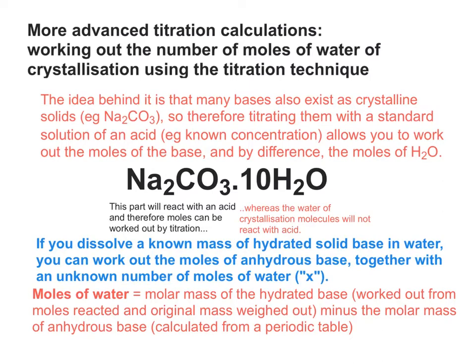Once you've got the molar mass of the hydrated base, you can take away the molar mass of the anhydrous base, which is just the Na2CO3 bit you can work out from a periodic table. And the difference between the two, the MR of water is 18, so how many times does 18 go into that difference? That tells you how many moles of water, and therefore the value of x.